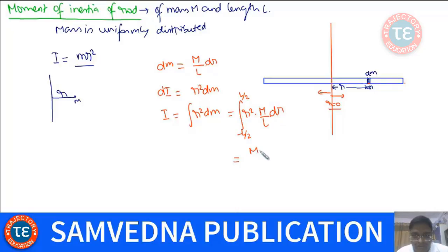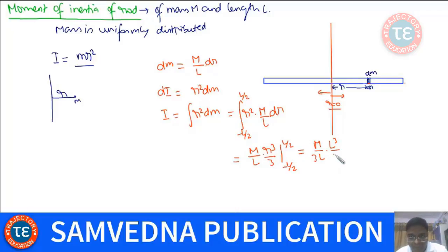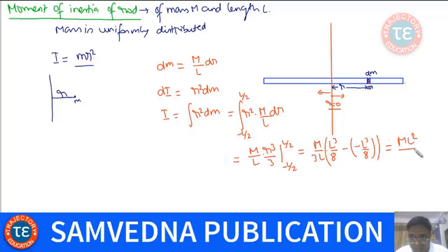Evaluating the integral: (M/L)·[R³/3] from −L/2 to +L/2. This gives (M/3L)·2·(L³/8). We also multiply by 2 when substituting both limits. So after substitution, the result comes out to ML²/12.